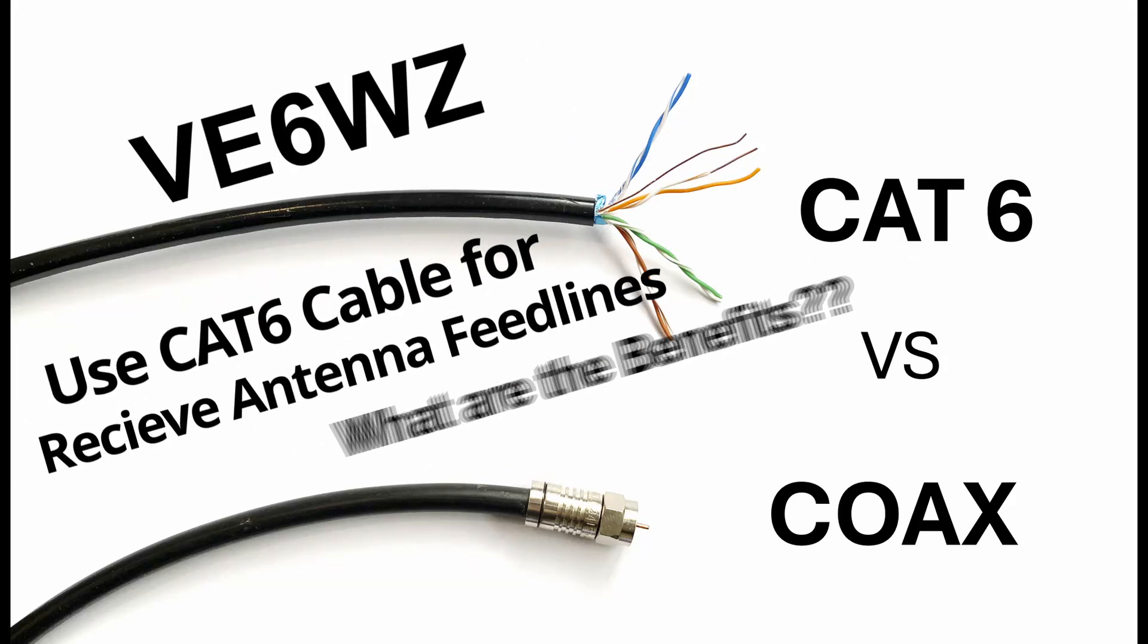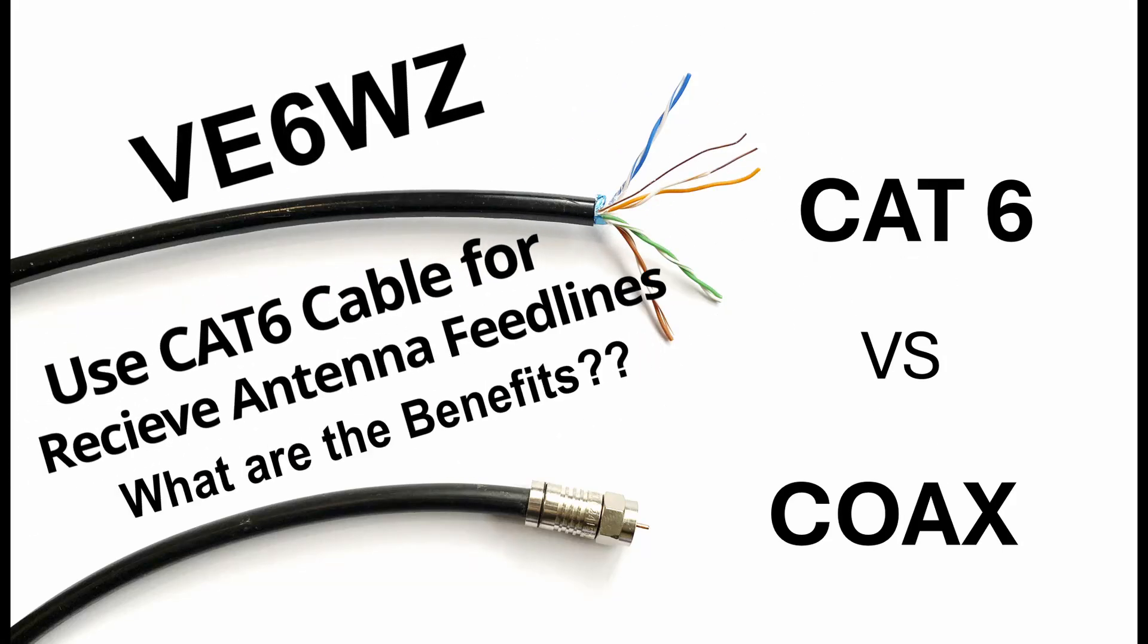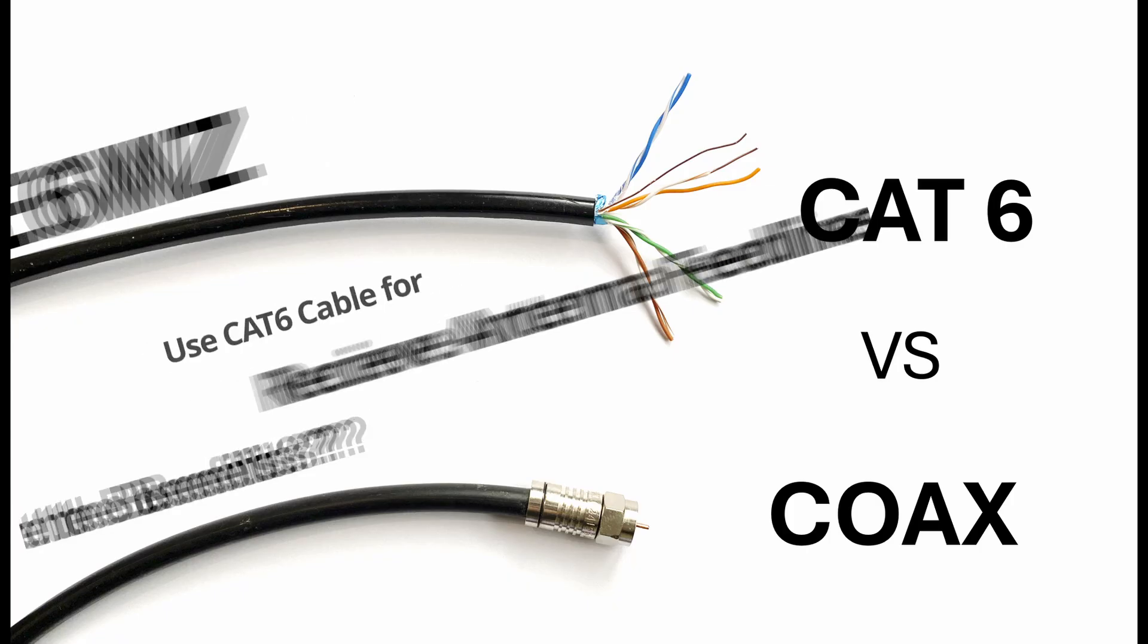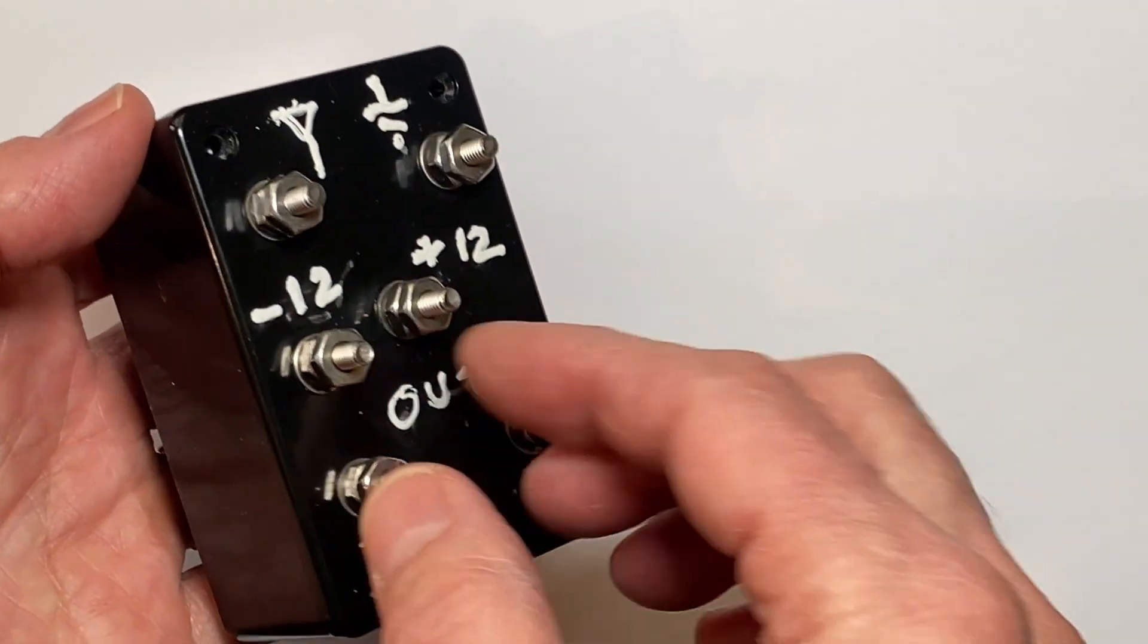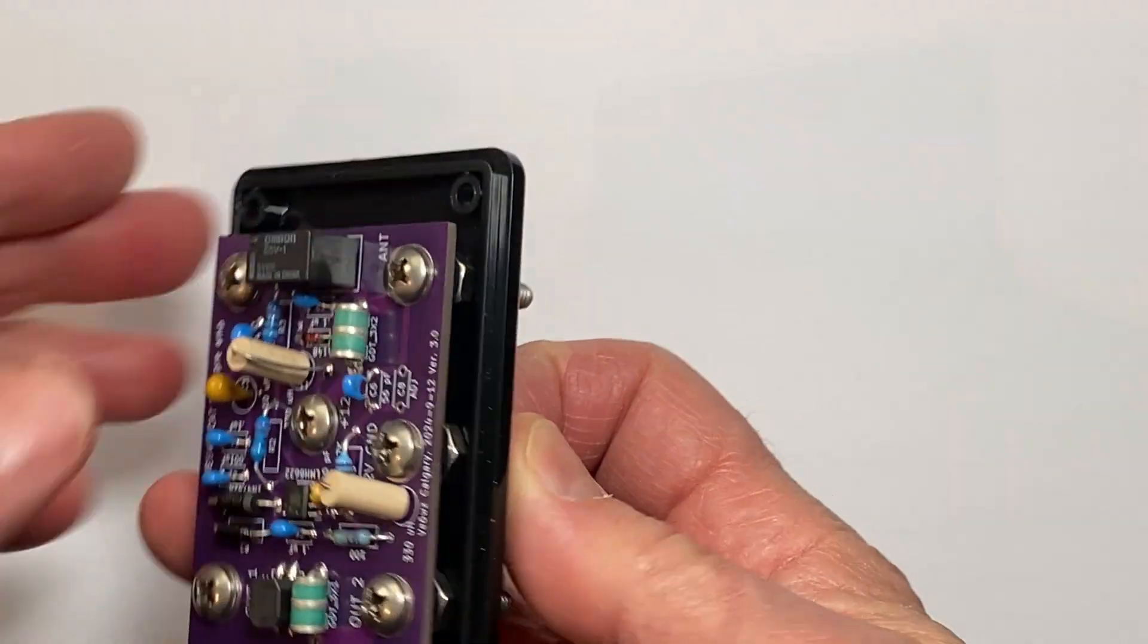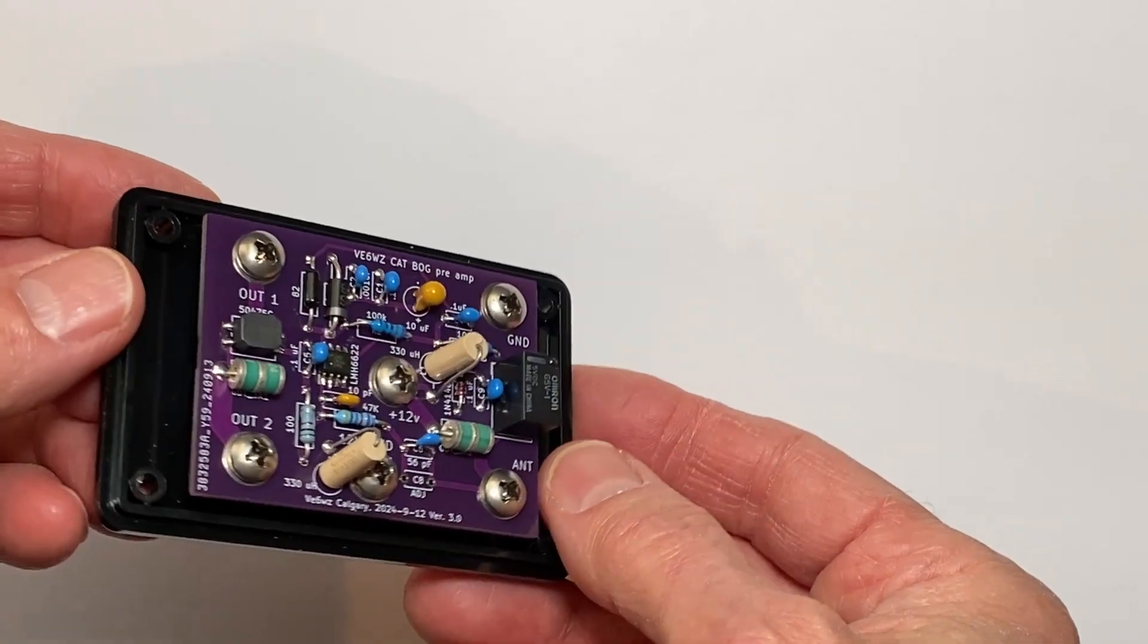Hey, why not use CAT6 Ethernet cable instead of coax for our receiving antennas? Let's talk about the benefits of doing this. I'm going to show how to build this transimpedance amplifier that I modified to match the 100 ohm CAT6 twisted pair.